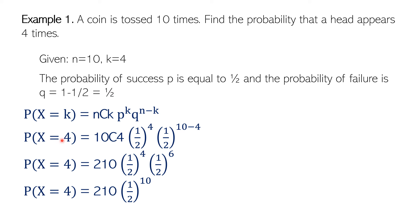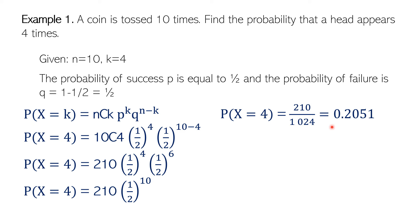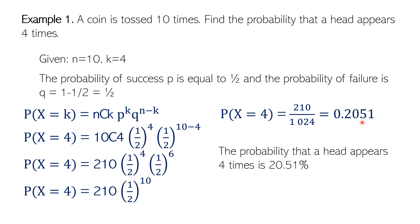Substituting these necessary values, the probability that X equals 4 (i.e., 4 heads appearing) is: 10 taken 4, times (1/2) raised to 4, times (1/2) raised to 6 — because heads appeared 4 times and tails appeared 6 times. Doing that directly in your calculator gives 0.2051. By conclusion, the probability that heads appears 4 times is 20.51%.